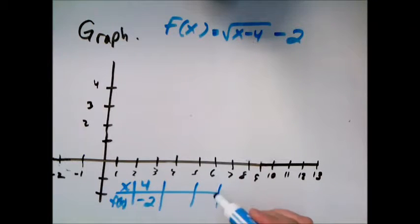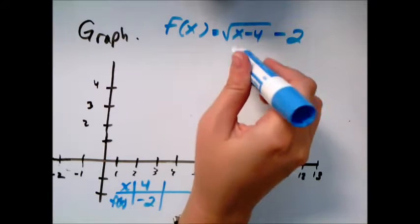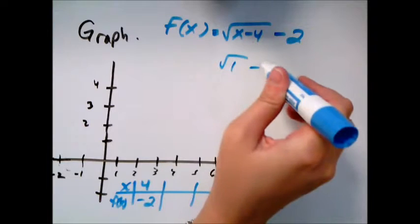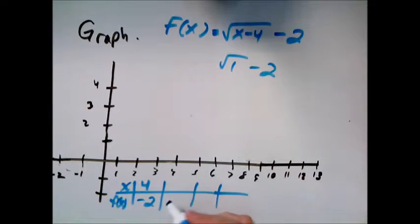Now I just want to pick a couple more points that will hopefully give me perfect squares. If I do 5, I get 5 minus 4, so square root of 1 minus 2, and 1 minus 2 is negative 1. So that was when I put 5 in there.